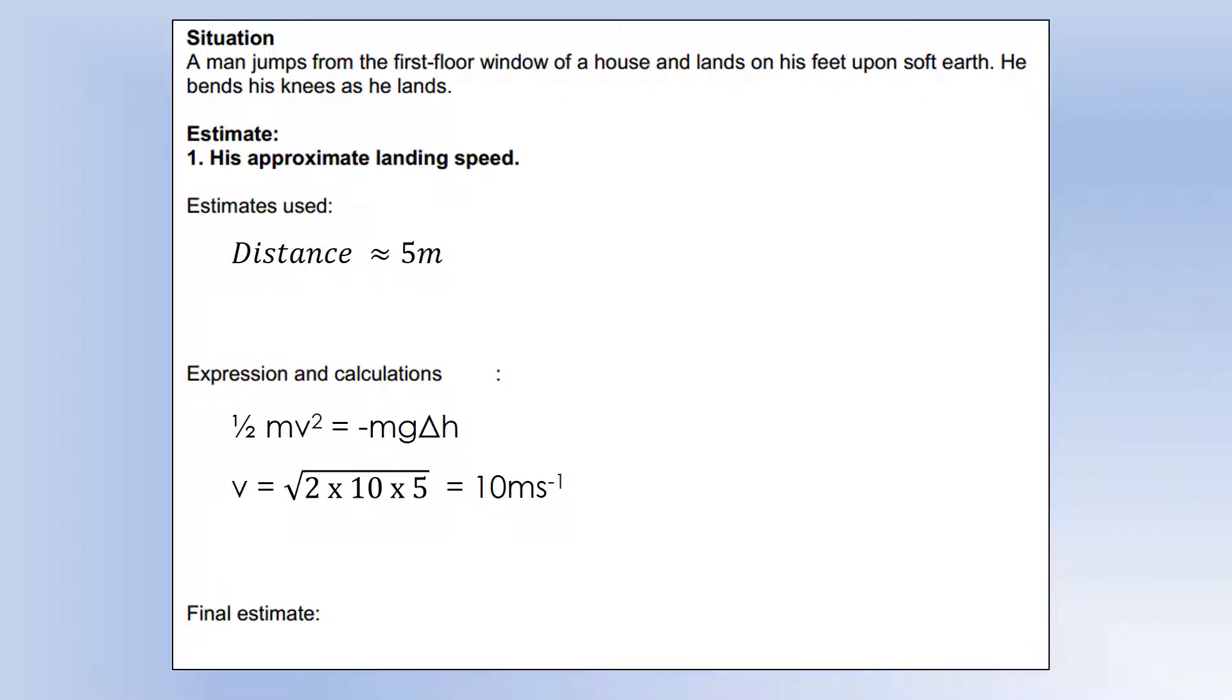Okay, so a man jumps from a first floor window and lands on his feet upon soft earth, and he bends his knees as he lands. It's approximate landing speed, so I've just estimated that the distance from the first floor window was about five meters.